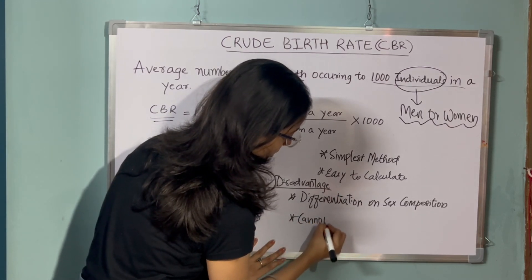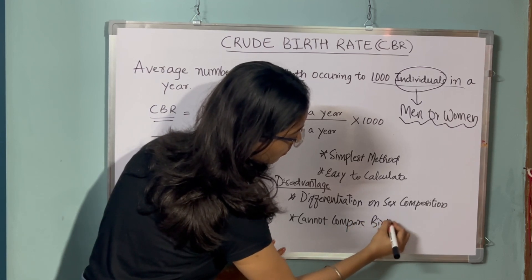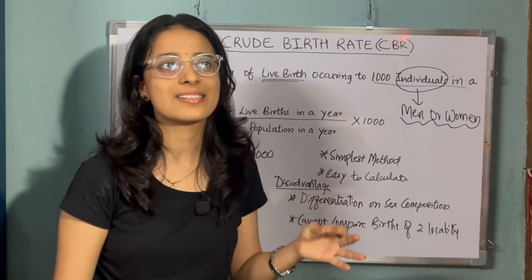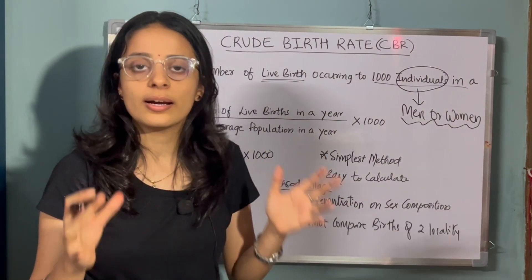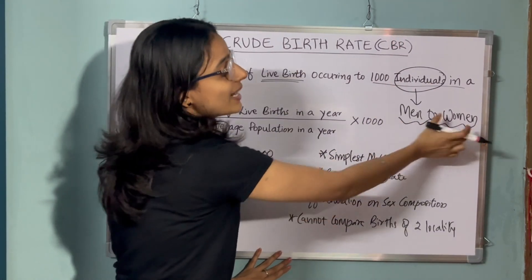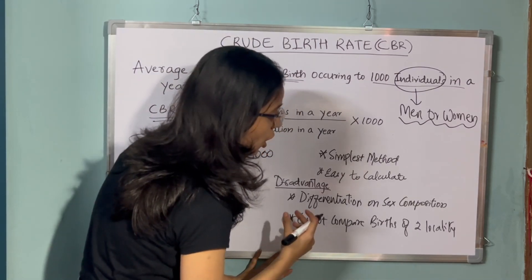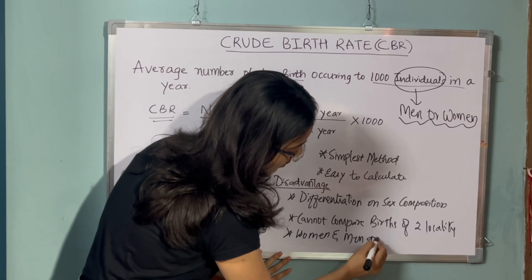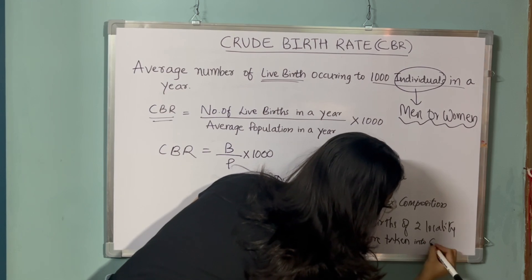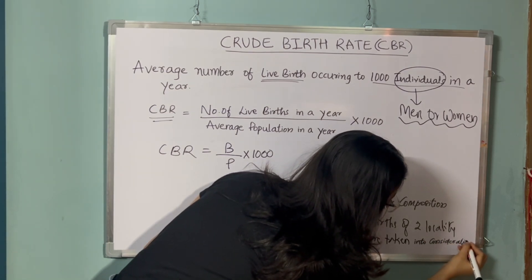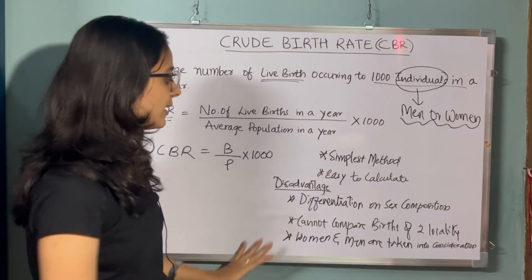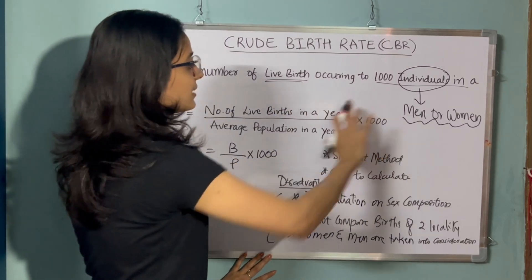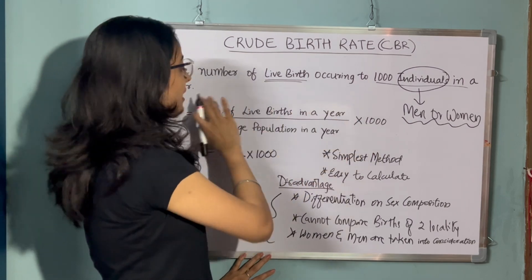Another disadvantage is that we cannot compare births of two localities using CBR. Also, when speaking of fertility we usually consider only women of a particular locality, but for CBR we consider both men and women — there is no differentiation of sex. While it is simplest and easy to calculate, there are few disadvantages. Remember the formula: number of live births in a year divided by average population in a year, multiplied by 1000. If we know the formula we can write the meaning and vice versa.